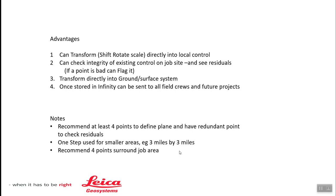If you have a large corridor — like a tech stop project — and you have control points over that whole area, you can just break it up into three or four mile chunks and call those one-steps different coordinate system names. Then you can move from one to the other, which allows you to work in that local system.